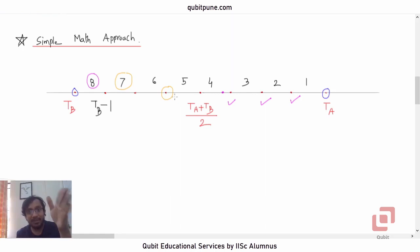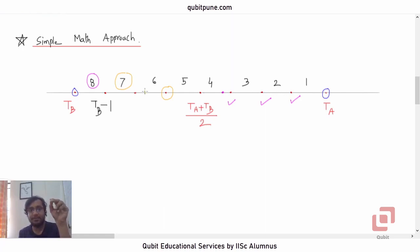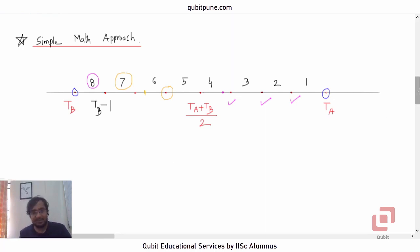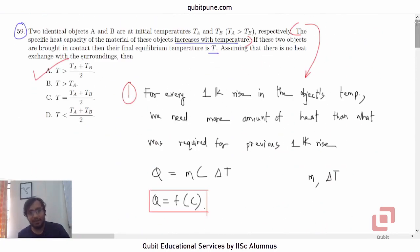When body B's temperature falls by two kelvin, body A's temperature rises by about five kelvin and has already crossed (Ta+Tb)/2, so equilibrium is reached somewhere above the midpoint. This is a more visual way to solve question 59. The answer is option A: T is greater than (Ta+Tb)/2. We are now only one problem away from completing the physics section of the SRFQ test 2021.